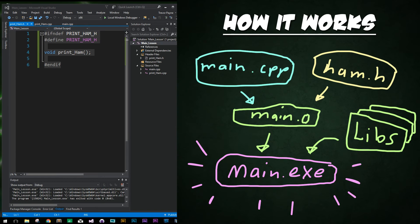So how do all these files interact and work together? When your program builds, the main.cpp file and the header files are compiled to create a main.o file. Other CPP files are compiled individually into .o files, and those are linked together with libraries to create your main exe.